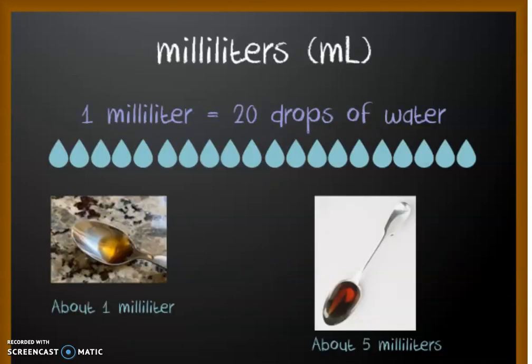Thinking about milliliters, one milliliter is about 20 droplets of water, and then I showed you guys this kitchen spoon with a little bit of tea in it. That's also about a milliliter, and then if you think about a teaspoon almost overflowing, like a teaspoon full of liquid, that's about five milliliters.